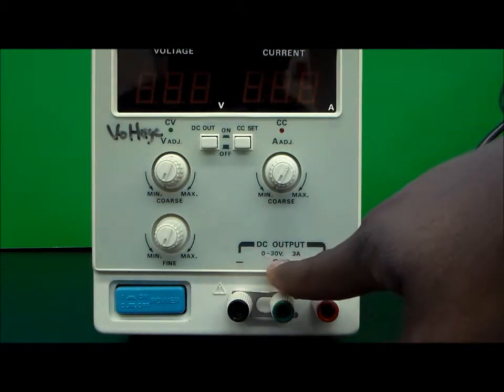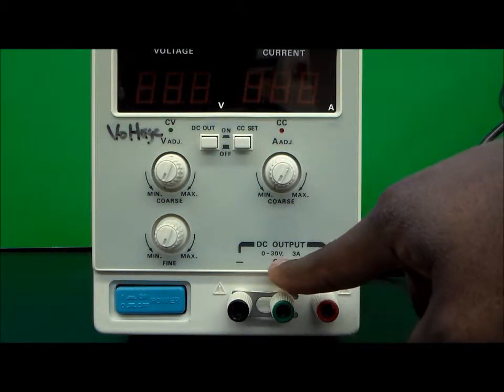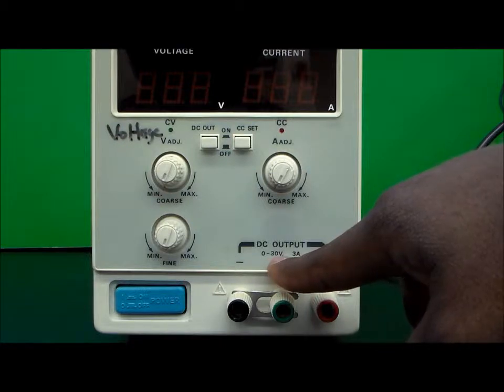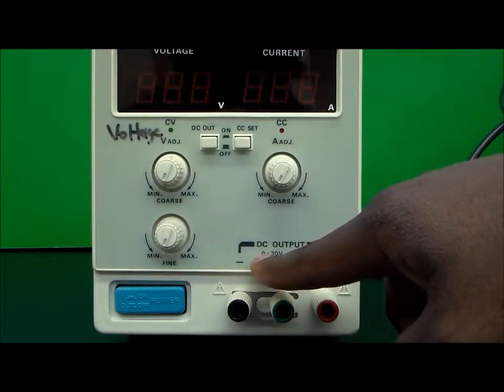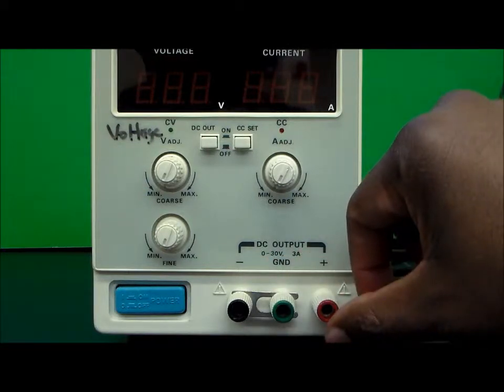The output from the DC power supply: you can get a maximum of 30 volts and 3 amps from this power supply and a minimum of 0 volts and 0 amps.